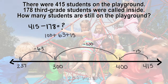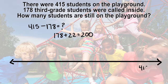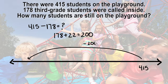Another way to solve this problem would be to round the 178 up to 200 by adding 22, and then use compensation by adding 22 back at the end. 415 minus 200 is 215. Now compensate by adding 22 for a final answer of 237.